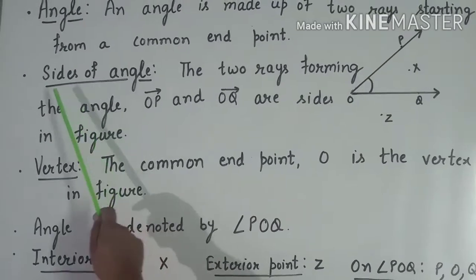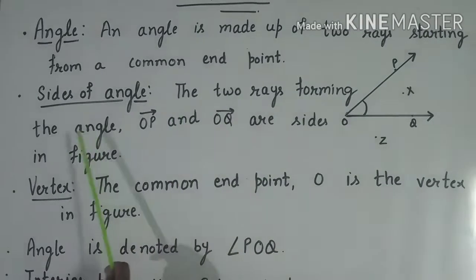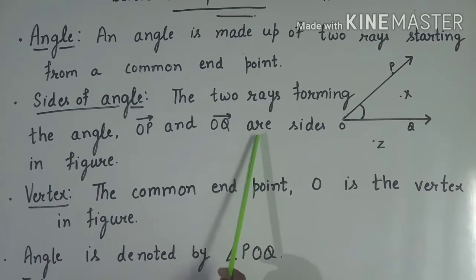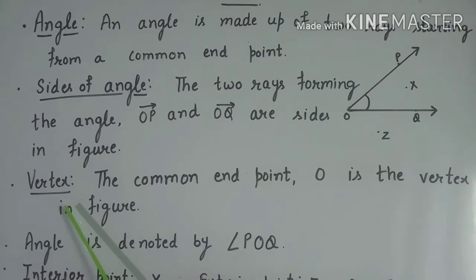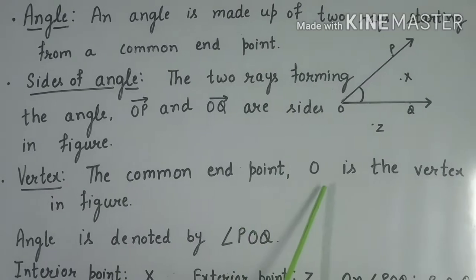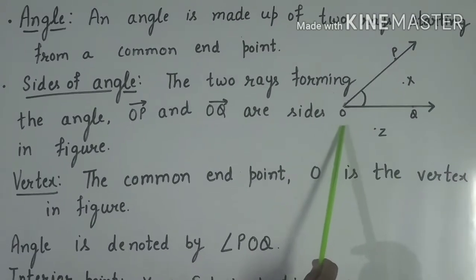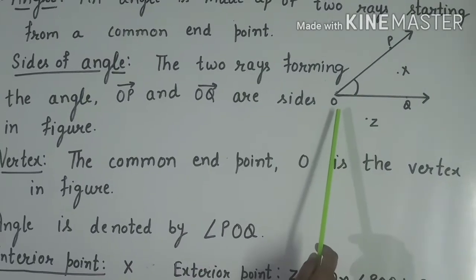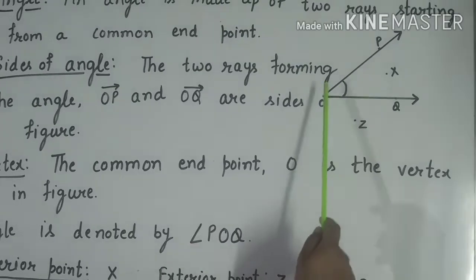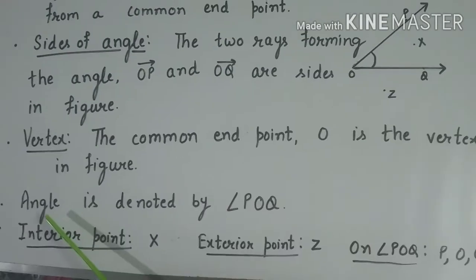The next topic is sides of angle. The two rays forming the angle, OP and OQ, are the sides in this figure. The third topic is vertex. The common end point O is the vertex in this figure. So, the common end point is the vertex and OP and OQ are the sides of the angle.